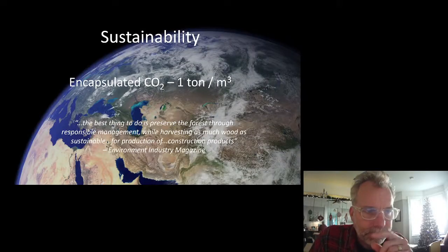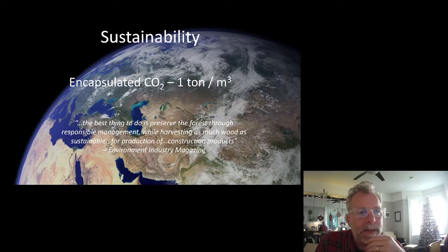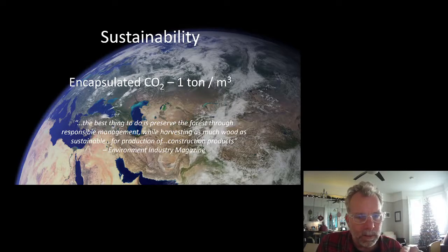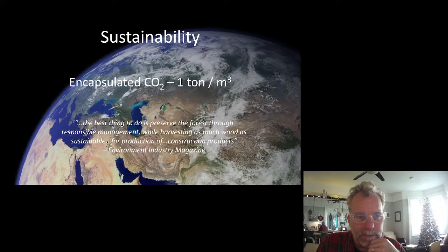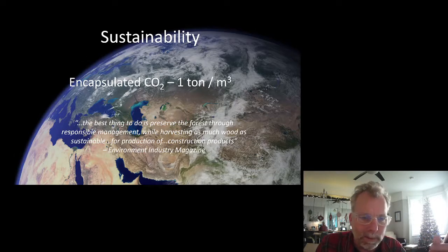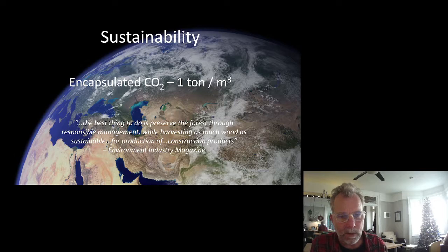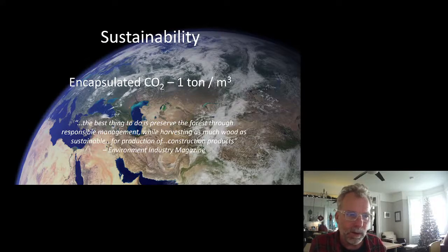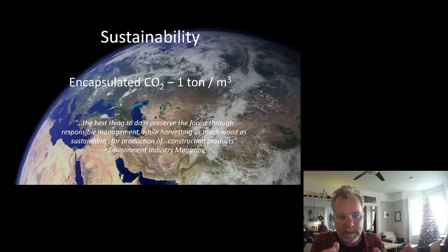So if we debunk the concerns about working with wood, what are the benefits? Sustainability is a big one. Wood will encapsulate about one ton of CO2-equivalent carbon in every cubic meter of wood — it actually ranges from 600 to 800 kilograms, but one ton per cubic meter is good enough as a rule of thumb. Unless you're doing an LCA on your project, in which case you want to be more precise.